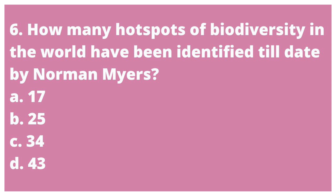Sixth question: How many hotspots of biodiversity in the world have been identified till date by Norman Myers? Option A, 17. Option B, 25. Option C, 34. Option D, 43. The correct answer is Option C, 34.